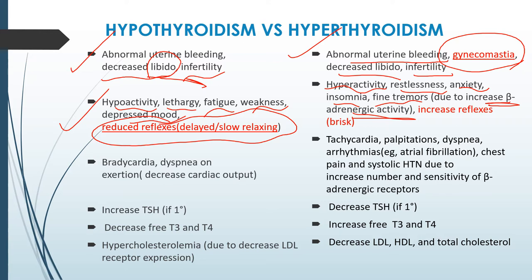In hyperthyroidism, we see increased reflexes, described as brisk — they become quick.